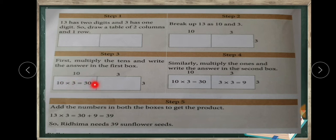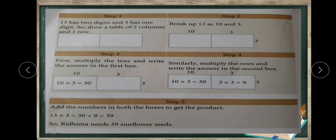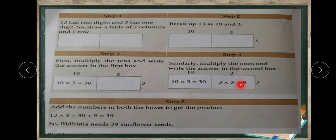In the column of 10, we multiply 10 and 3. Write 10 and 3 here, and multiply the 10s — write the answer in the first box. So 3 tens, or 10 threes, are 30. This is the column of 10 and row of 3. And in the column of 3, the row is also 3, so we write 3 into 3, which is 9.